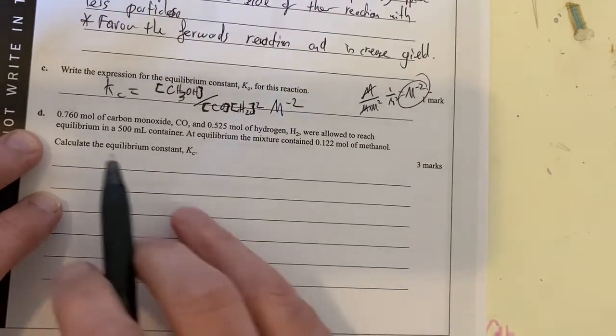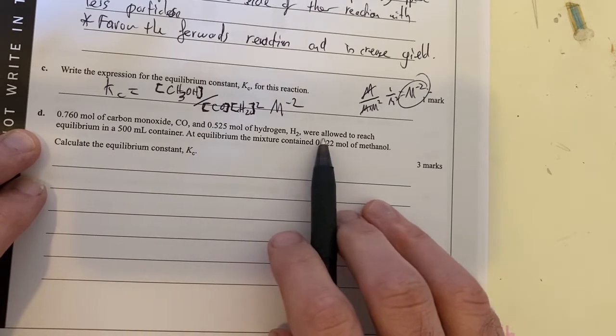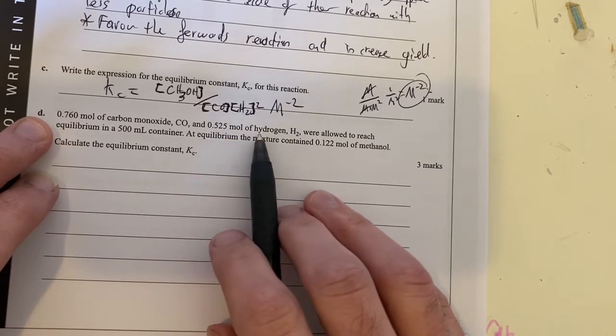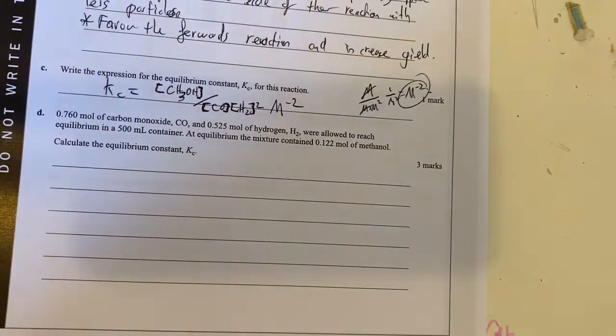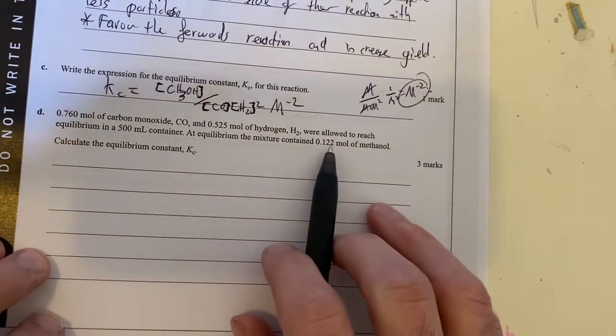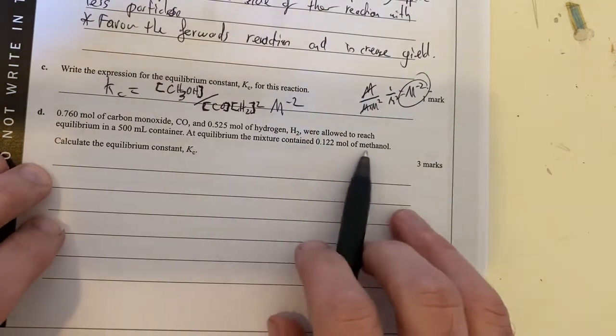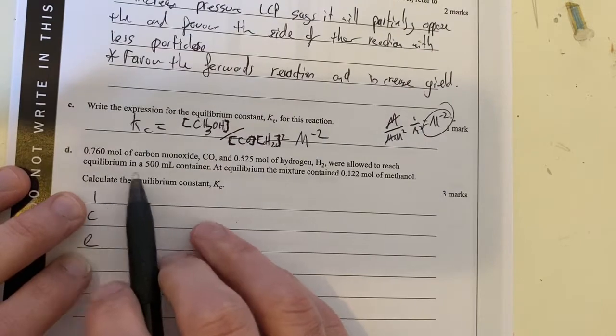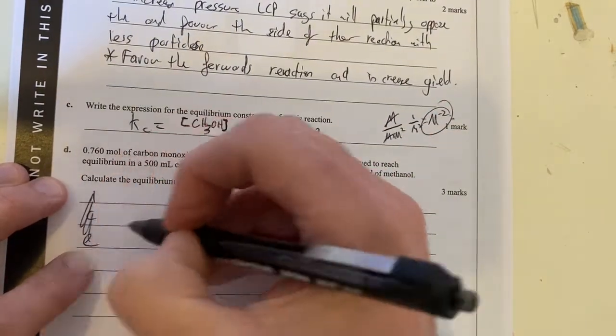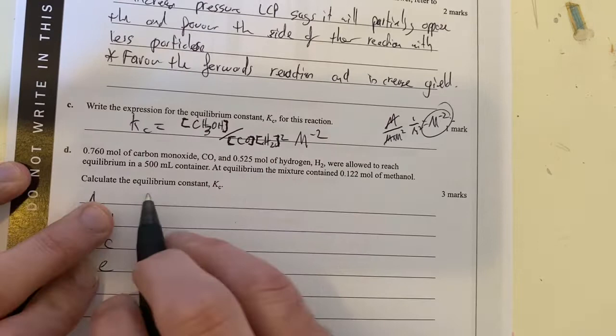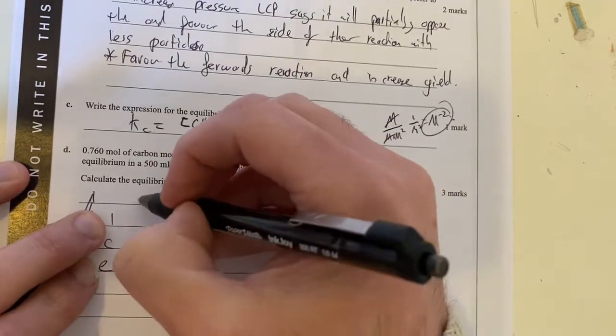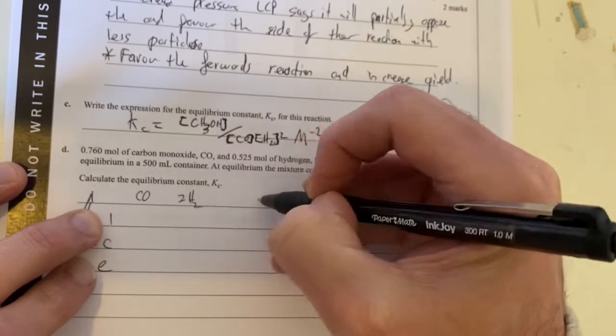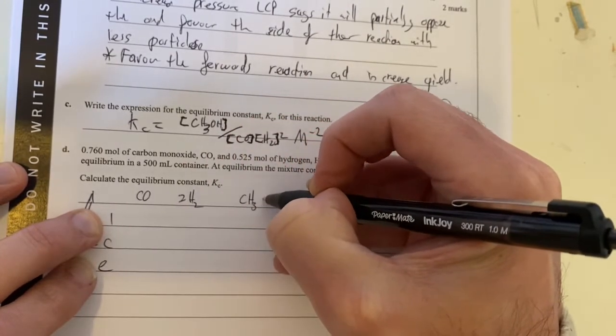Moving on to part D. This is an ICE question. We've got a certain amount of stuff was added to a container and allowed to reach equilibrium, and we've got our equilibrium concentration at equilibrium of something here. So therefore, it's going to be ICE. Let's have a look at what we've got. Let's go ICE here, and let's put our equation at the top here. We've got CO, then we had 2H2, and we have CH3OH here.